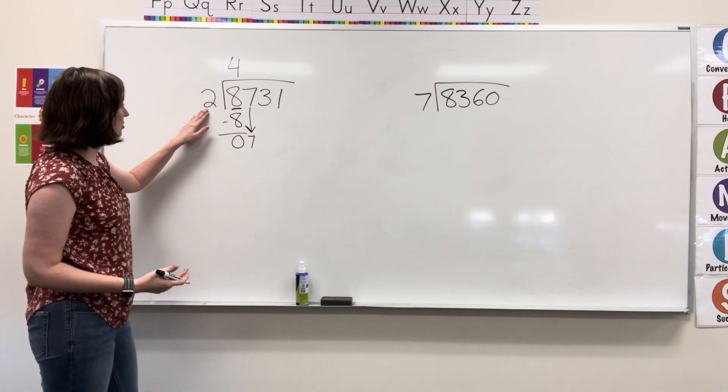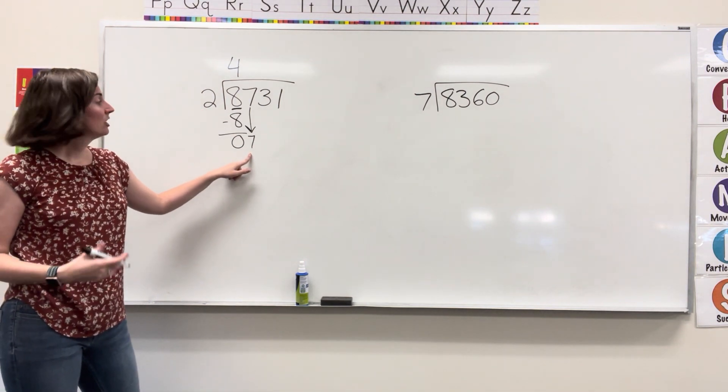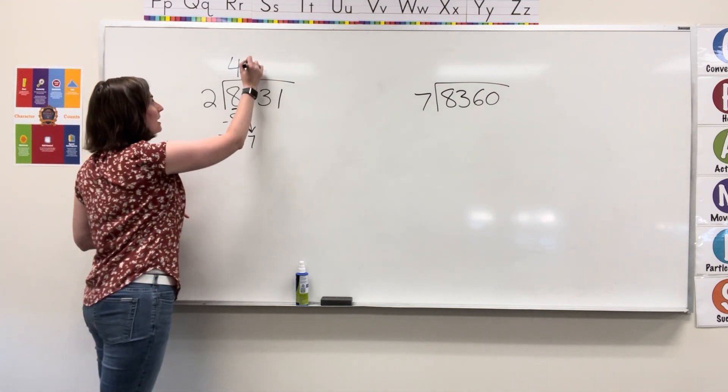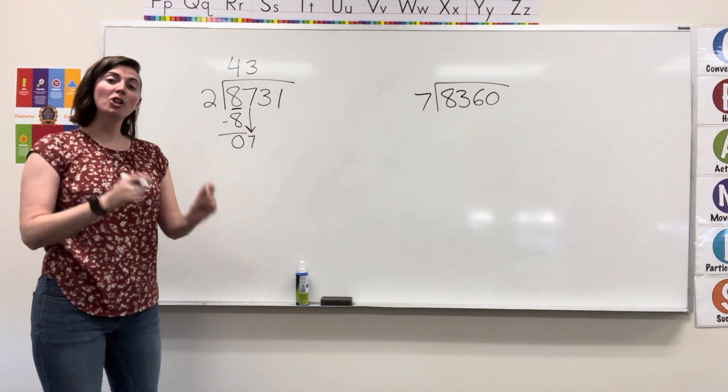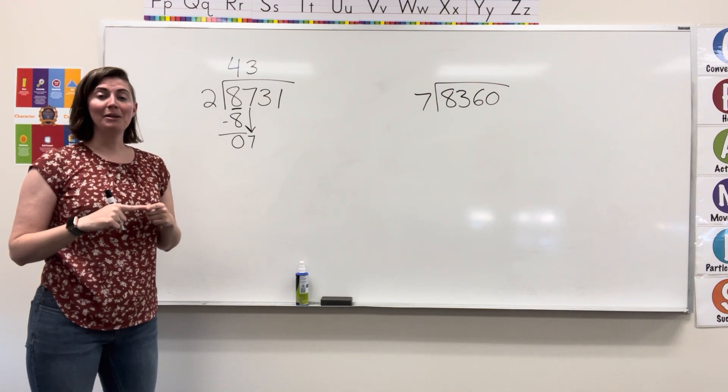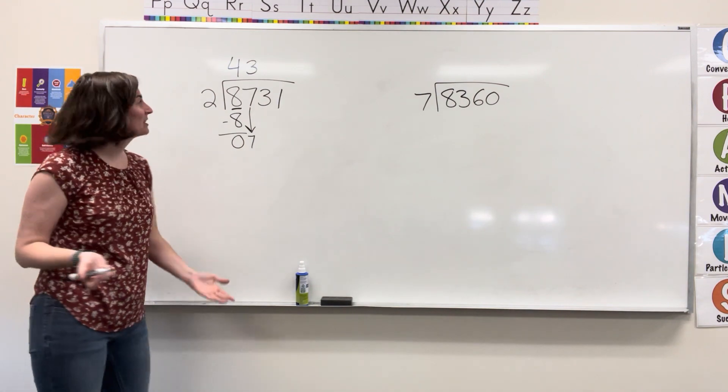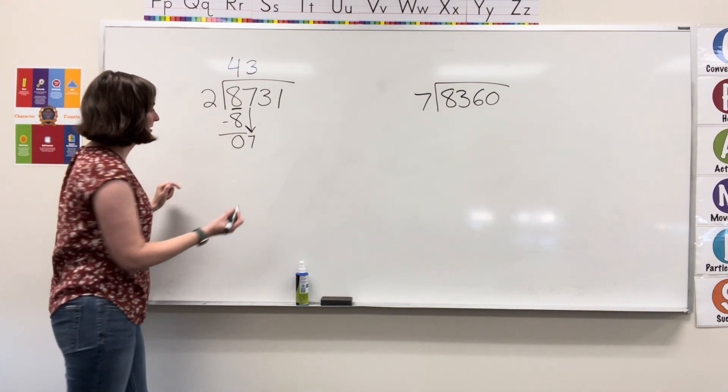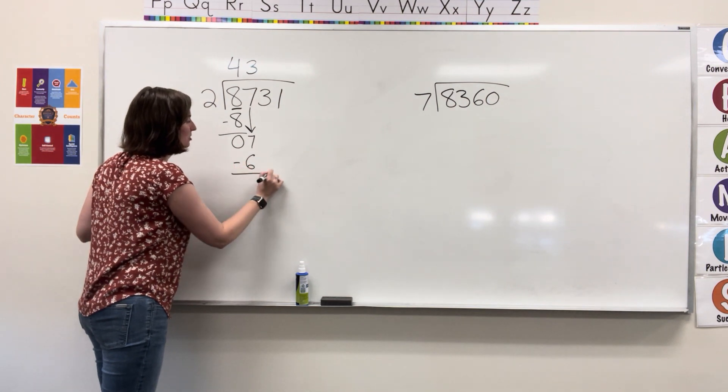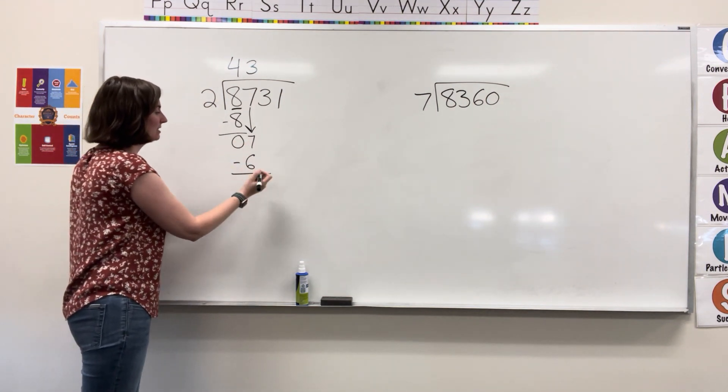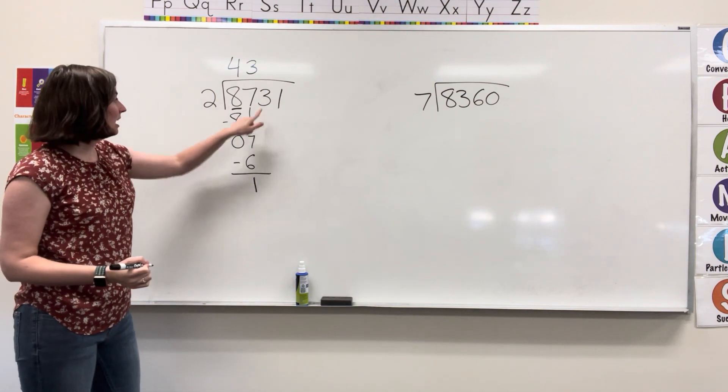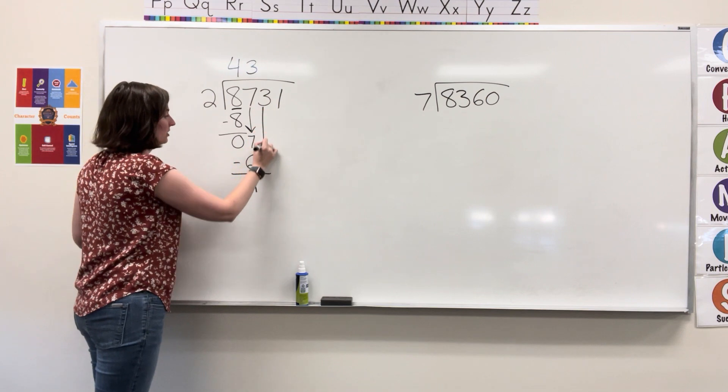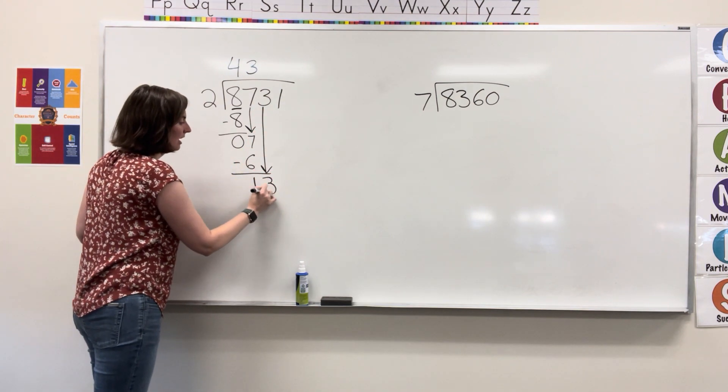So now I'm looking at two fitting into seven. Two fits into seven three times. Now it doesn't fit in exactly. That's as close as we can get without it being too big because we have to subtract. So now I'm going to multiply three times two which gets me six, and I subtract seven minus six and I get one. I'm going to keep bringing down these digits until there are none left. So I have to grab that three and bring it down.